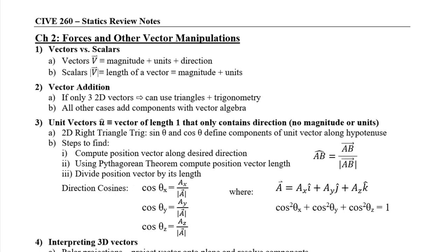Going back to chapter two, you'll remember that we started talking about forces and other vectors. We had vectors versus scalars — the main difference between those is direction. Vectors have direction, scalars do not. We can express a lot of different terms in terms of both a vector or a scalar. If we talk about the magnitude of a force, that's a scalar; if we talk about a force having a direction, such as a gravitational force pulling toward the center of the earth, that's a vector.